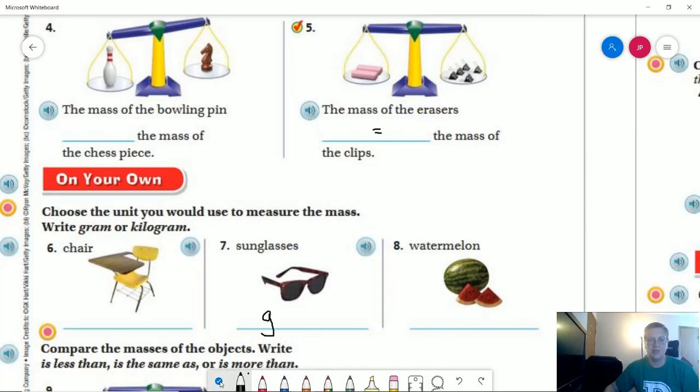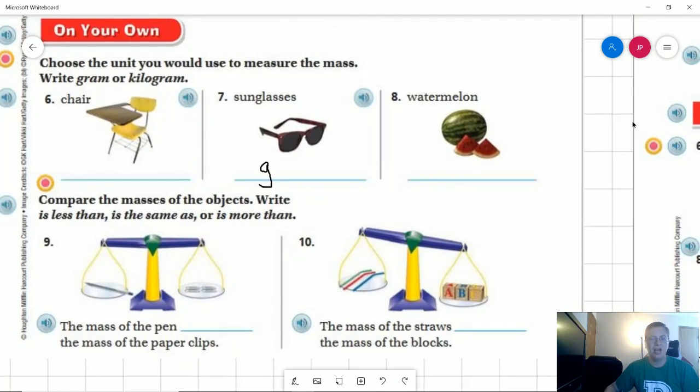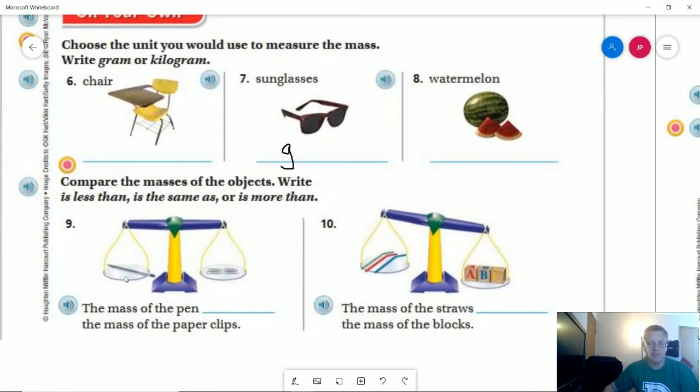So I'm going to use the abbreviation for grams for that. Number nine, the mass of the pen and it looks like they're comparing it to four paper clips and this one looks a little bit off to me. Now if you are looking at it at home and it looks about equal, I think it also looks about equal. It doesn't look as lopsided as this one but my perspective, I think the pen is slightly more than the paper clip.